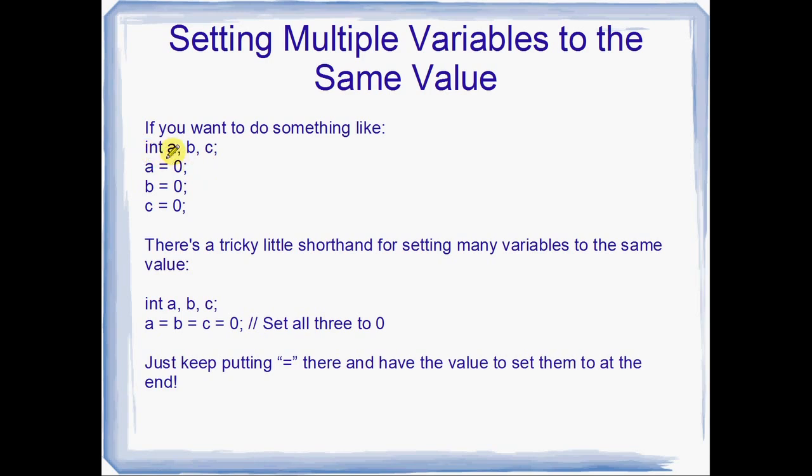This is what we want to do. Int a, b, and c. Three integers. And we want to set them all to exactly the same value. Zero just here. We can do it like this. a equals zero, b equals zero, c equals zero. But there's a quicker way to do it. And it's right here. So int a, b, c, you've still got to declare your integers. But then the shorthand way of setting them all to the same value is a equals b equals c equals zero.